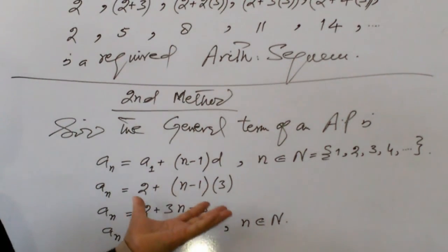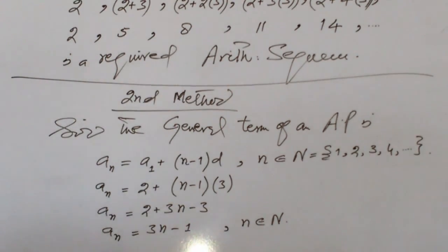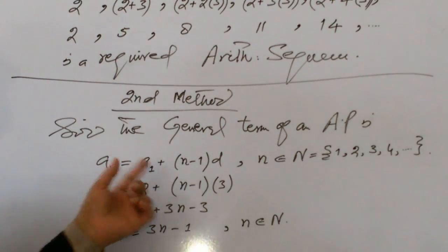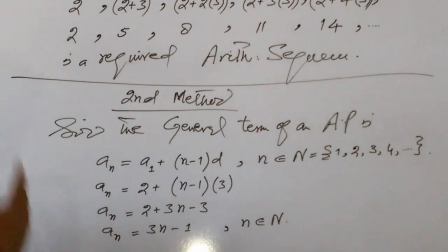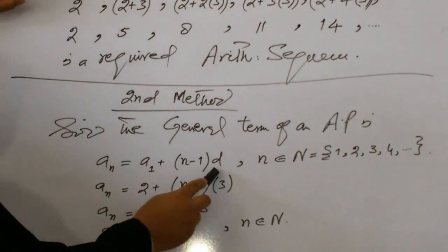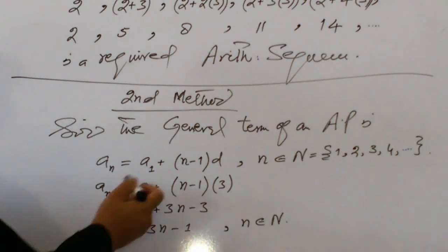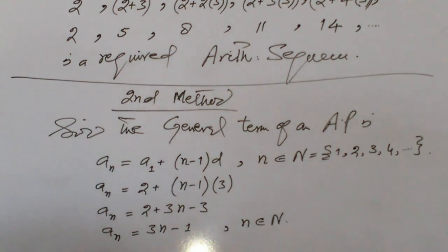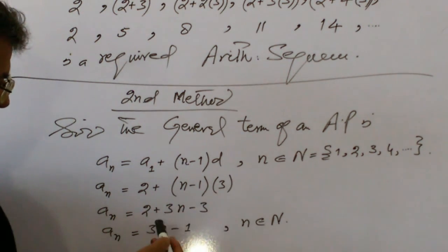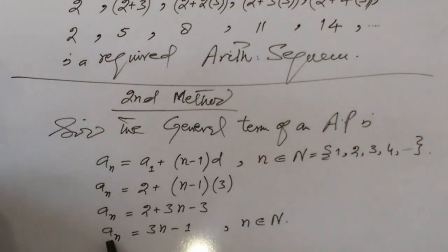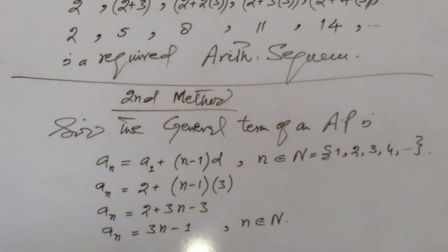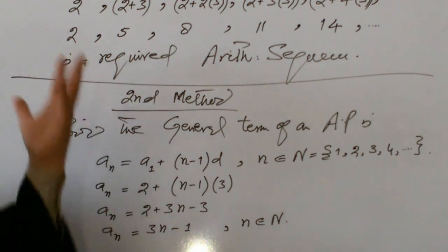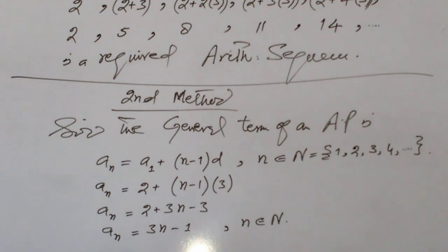Second example: from the calculation of the above sequence, when we use the general formula An equals A1 plus (n minus 1) times D, where A1 is the first term and D is the common difference. In this case A1 equals 2 and the common difference D equals 3. Substituting, we get An equals 2 plus (n minus 1) times 3, which simplifies to An equals 3n minus 1.